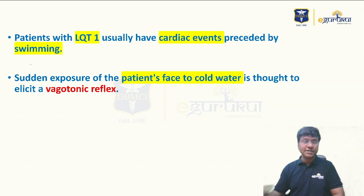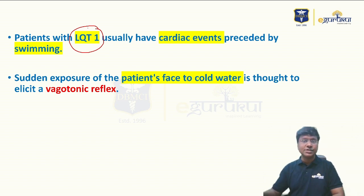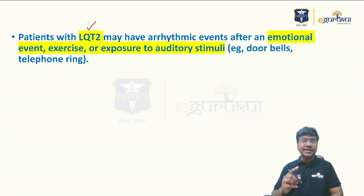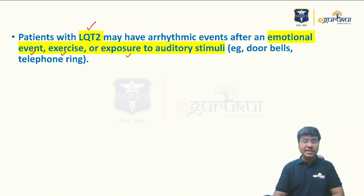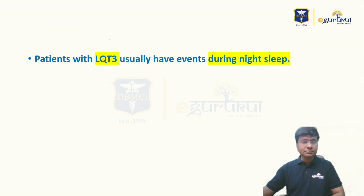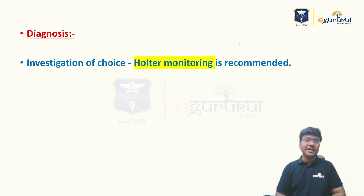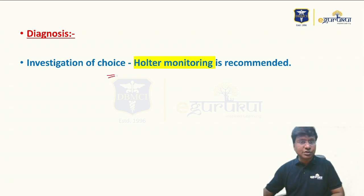LQT1 individuals have cardiac events triggered by swimming — when the face is exposed to cold water, a vagotonic reflex is elicited, further prolonging QT and progressing to polymorphic ventricular tachycardia and syncope. LQT2 is triggered by emotional events, exercise, or auditory stimuli. LQT3 occurs during sleep. These are the important distinguishing features of the long QT subtypes in Romano-Ward syndrome.